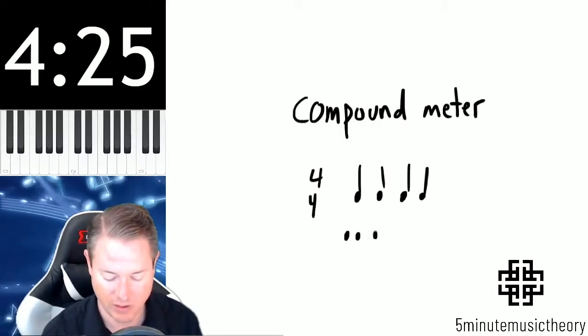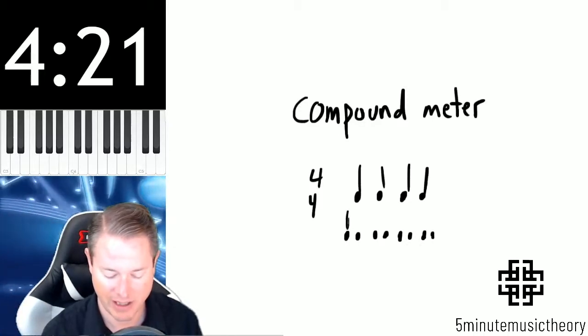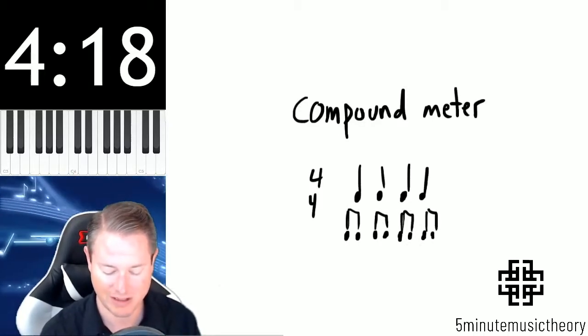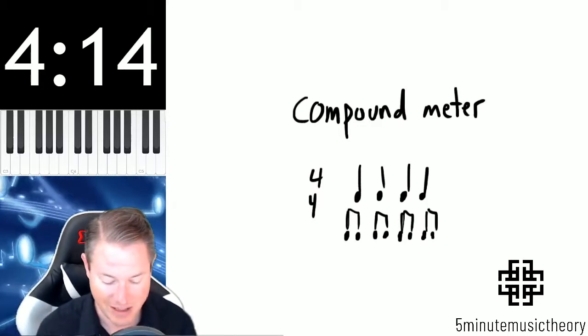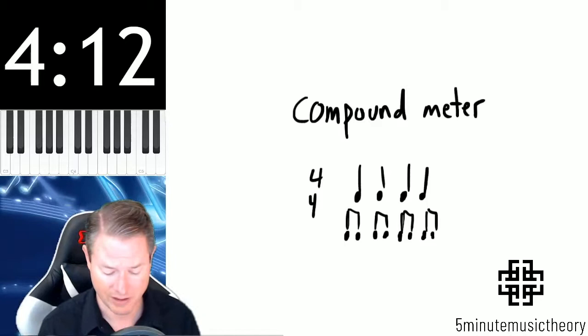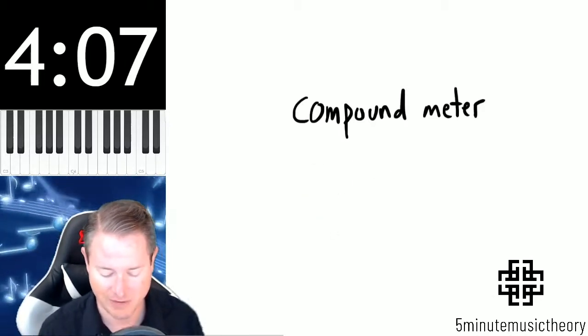If we break each one of those quarter notes into its next quicker value, they would each break into two eighth notes. And notice that I'm beaming those together, that's because each of those groups would be in separate beats. So that's an example of simple meter. It's where the beats divide into two equal parts. Now compound meter is a little bit different.